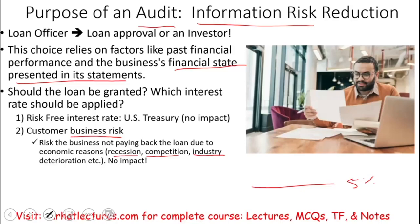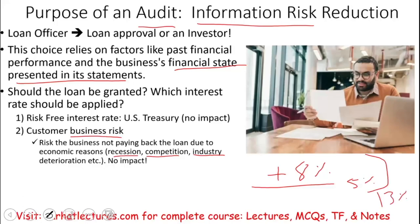Given these factors, I might add a few percentage points on the risk-free rate. So maybe 5% is the risk-free rate and their business risk is equal to 8%. Therefore, together, I'm going to charge them 13%. So based on risk-free rate and their business risk, you will charge 13%. But there's a third risk.